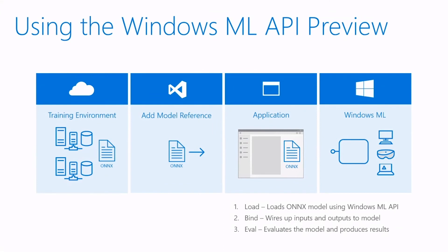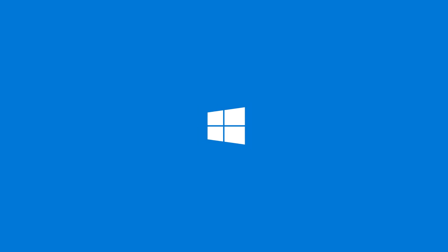The API itself is really pretty simple. There are three main actions. You load the model into the runtime, bind your app's data structures for input and output, and then evaluate the model against the inputs and use the outputs in your app.